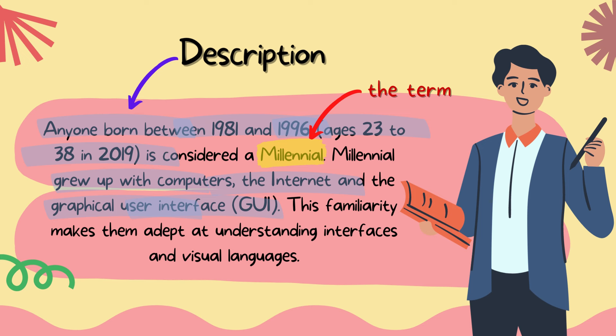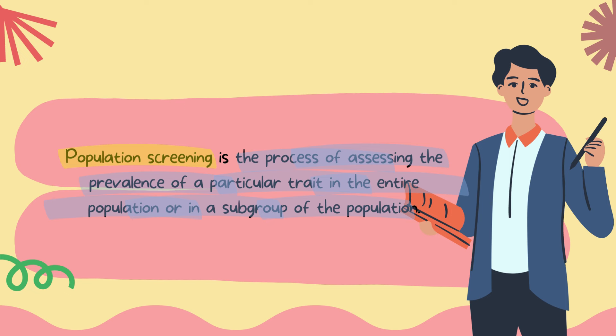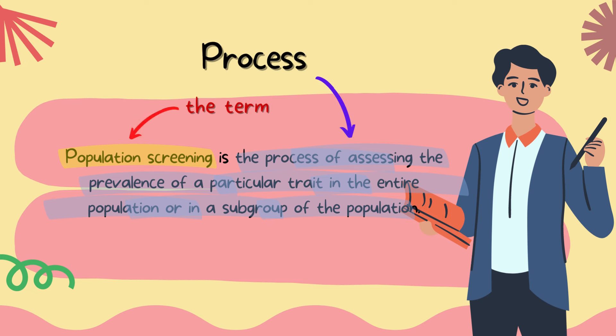We can also use process narration in expanding a definition. Process narration explains how the term is used. For example, population screening is the process of assessing the prevalence of a particular trait in the entire population or in a subgroup of the population.